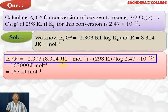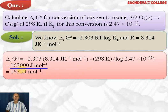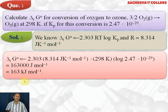Substituting: delta G = −2.303 × 8.314 × 298 × log(2.47 × 10⁻²⁹). On calculation we get 163,000 joules per mole, that is 163 kilojoules per mole. Delta G is positive, which means the process is non-spontaneous at 298 K.